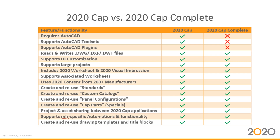2020 Cap requires AutoCAD; 2020 CapComplete does not. 2020 Cap supports AutoCAD tool sets; CapComplete doesn't yet, though that may come in the future. The same is true for AutoCAD plugins. Both applications read and write DXF, DWG, and DWT files. They both support UI customization so each individual can customize their workspace. They both support large projects and are powerful enough to handle multi-floors and multi-buildings. They both include 2020 Worksheet and 2020 Visual Impression.